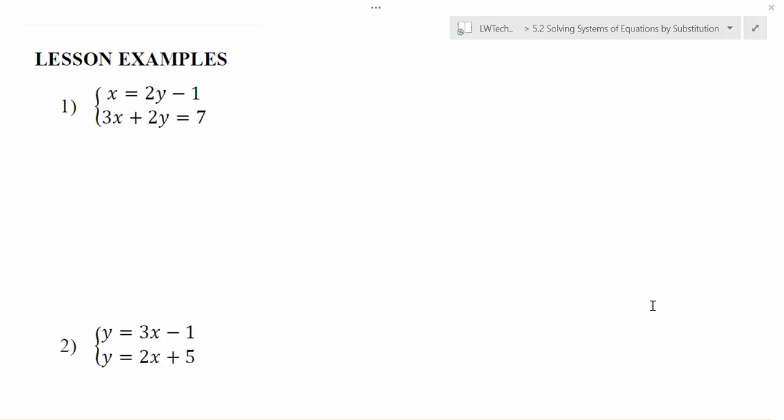Let's look at problem one here as an example. My first equation says that x is equal to 2y minus 1, and I want ordered pairs of x and y that will make that work. My second equation is 3x plus 2y equals 7, and I'm looking for x-y pairs that will fit in both of these.